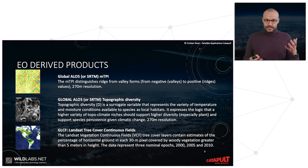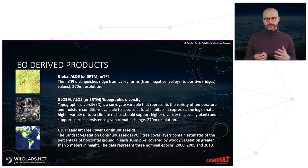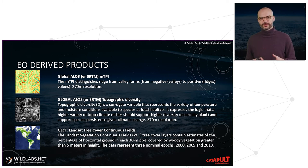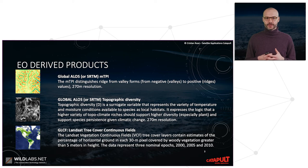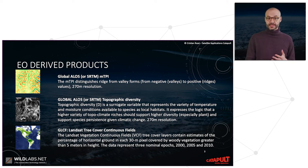Still on topography, there are products such as the MTPI, used to distinguish ridges from valley forms at 270-meter resolution, and topographic diversity — a variety of temperature and moisture conditions available to species as local habitats.